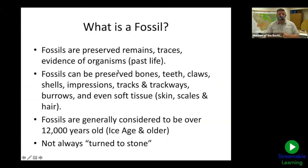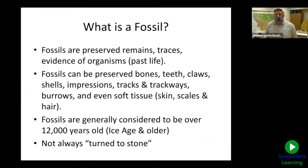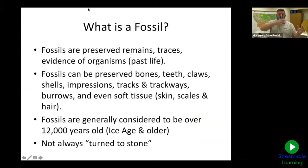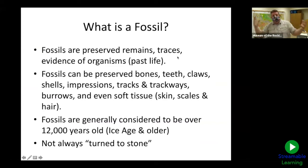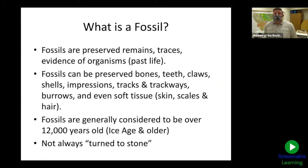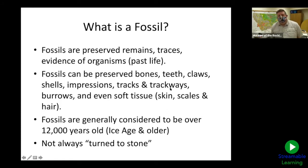The question is: what is a fossil? We get that question a lot. Fossils are preserved remains, traces, and evidence of organisms — past life. Generally these things are about 12,000 years old or older. So basically from the Ice Age — mammoths and mastodons — to Tyrannosaurus rexes, to trilobites and weird invertebrate creatures. They can be preserved as hard parts: bones, teeth, claws, shells. We can also get impressions, tracks and trackways, burrows, and even soft tissue like skin and feathers. The key takeaway is fossils are not always turned to stone — we'll cover that in just a bit.